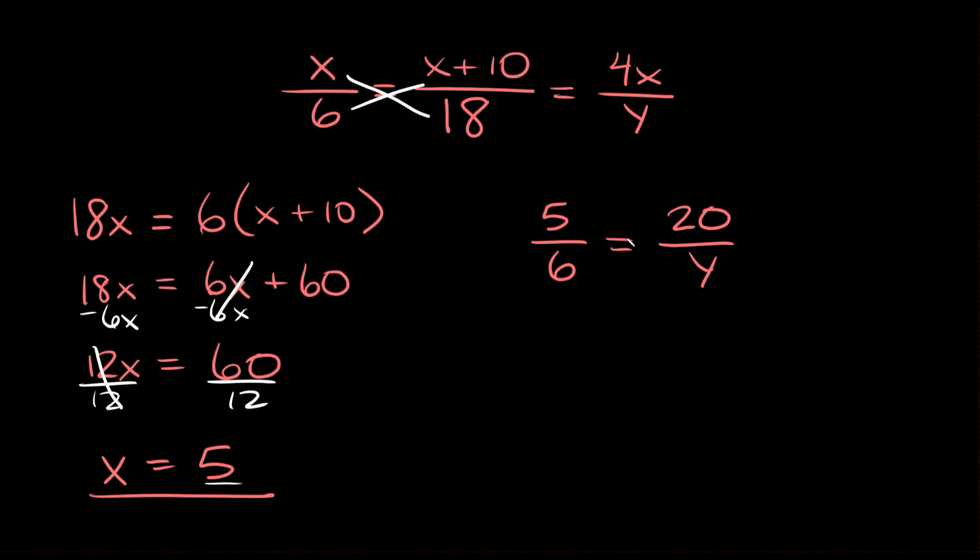Again to solve for y we can simply cross multiply. So first 5 times y equals 5y. And that's going to equal 6 times 20 which is 120. So to solve for y we're going to divide both sides by 5.